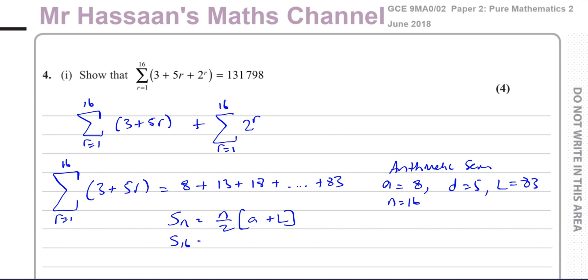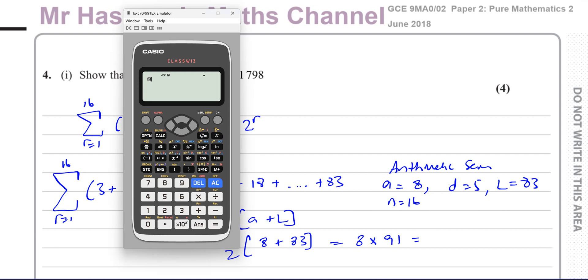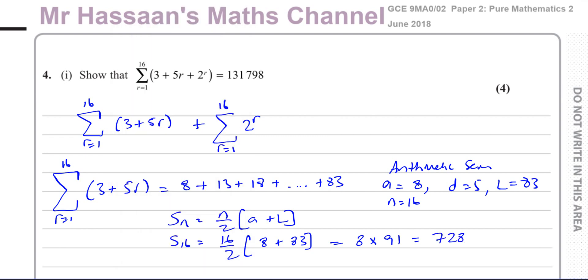So we say the sum of these 16 terms is 16 over 2 times A, which is 8, plus L, which is 83. So you end up with 8 times, and that's going to be 91. So we work out what that is. 8 times 91, that's 728. So that part of this is 728, basically.